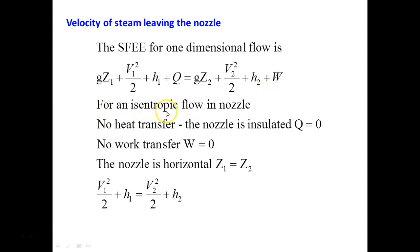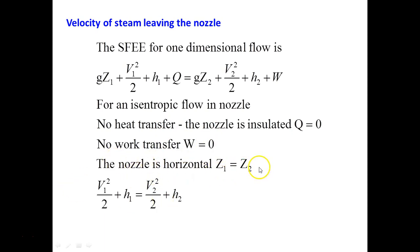For isentropic flow through a nozzle, we assume no heat transfer (Q = 0) and no work transfer (W = 0), since the steam just converts pressure into kinetic energy without doing work. Assuming the nozzle is horizontal, Z₁ = Z₂. Finally, we get: V₁²/2 + H₁ = V₂²/2 + H₂. This is the steady flow energy equation for the nozzle.